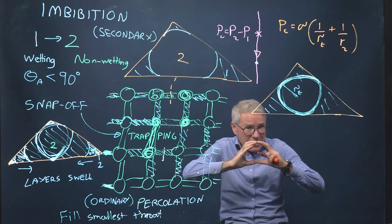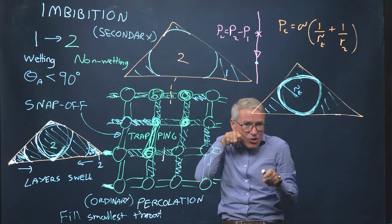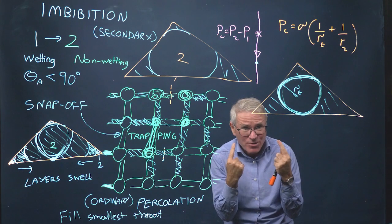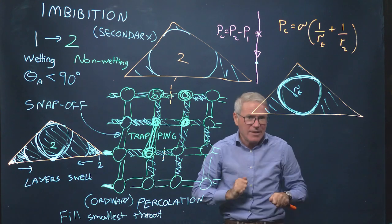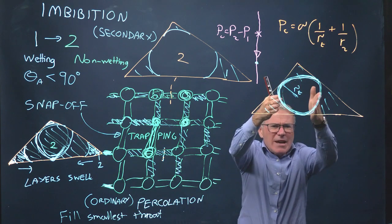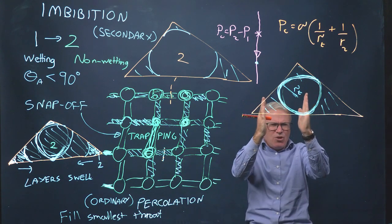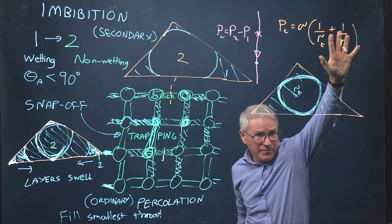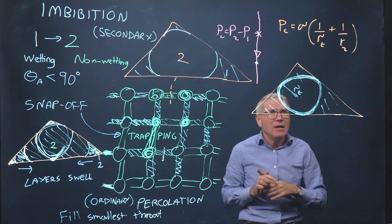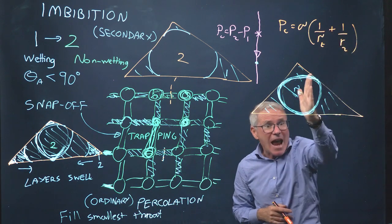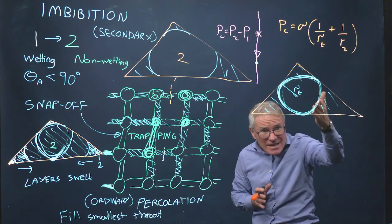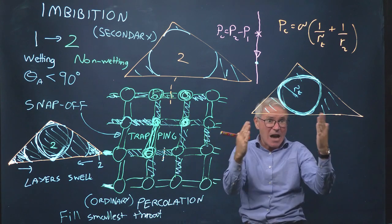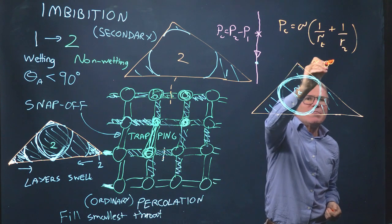When we describe a piston-like process in primary drainage, phase 2 displaces phase 1 and the meniscus is curved in two directions — more or less equal curvature in both, giving 2*sigma/r. In snap-off, it's curved in this direction but out of the plane of the board the curvature could be assumed zero, or it could actually be negative because it goes out that way. So most treatments assume it's zero, or that the radius out of the plane of the board is much larger and 1/r is much smaller. In reality, because this is a throat leading into a pore, it actually has to be negative. So P_c is roughly sigma over the throat radius.